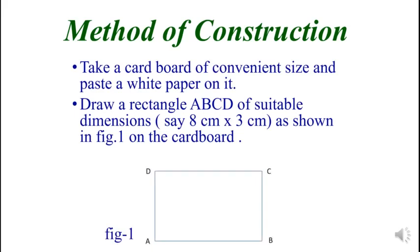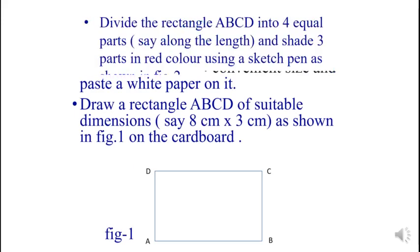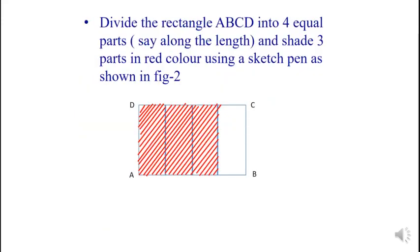So this is our figure. ABCD is the rectangle. Then divide the rectangle ABCD into 4 equal parts. The rectangle is divided into 4 equal parts vertically and shade 3 parts in red color using a sketch pen as shown in figure. Here the rectangle is divided into 4 parts and 3 parts are shaded with red sketch pen.